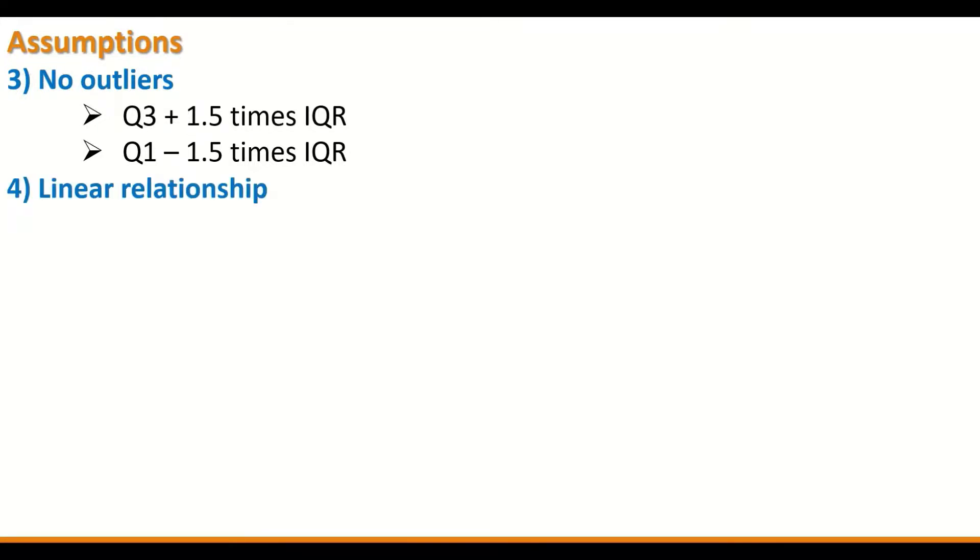Another assumption that has to be met is that there should be a linear relationship between the two variables. The way to examine that is to use a scatterplot to draw one data on x-axis, the other data on the y-axis, and then look for linearity in the relationship.